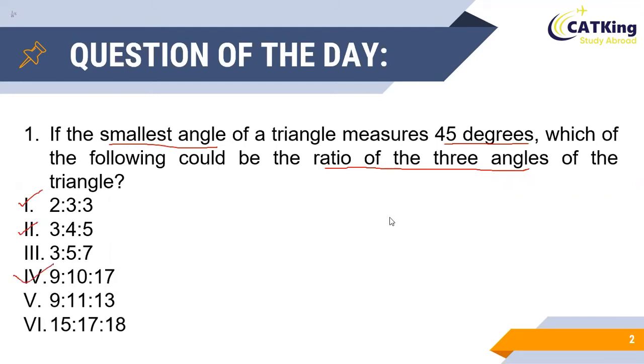Now let us see how we arrived at these particular answers. As you can see, the smallest angle in this triangle is given as 45 degrees. We know that the sum of the three angles in a triangle always equals 180 degrees.